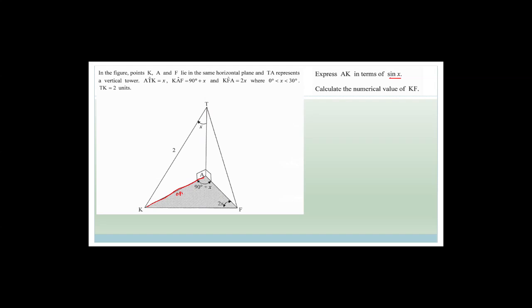They ask us to express AK in terms of sine X. We know TK is 2 — that's the hypotenuse — and AK is the opposite side of angle X. So sine X equals AK over 2, therefore AK equals 2 sine X. So this line here is 2 sine X.